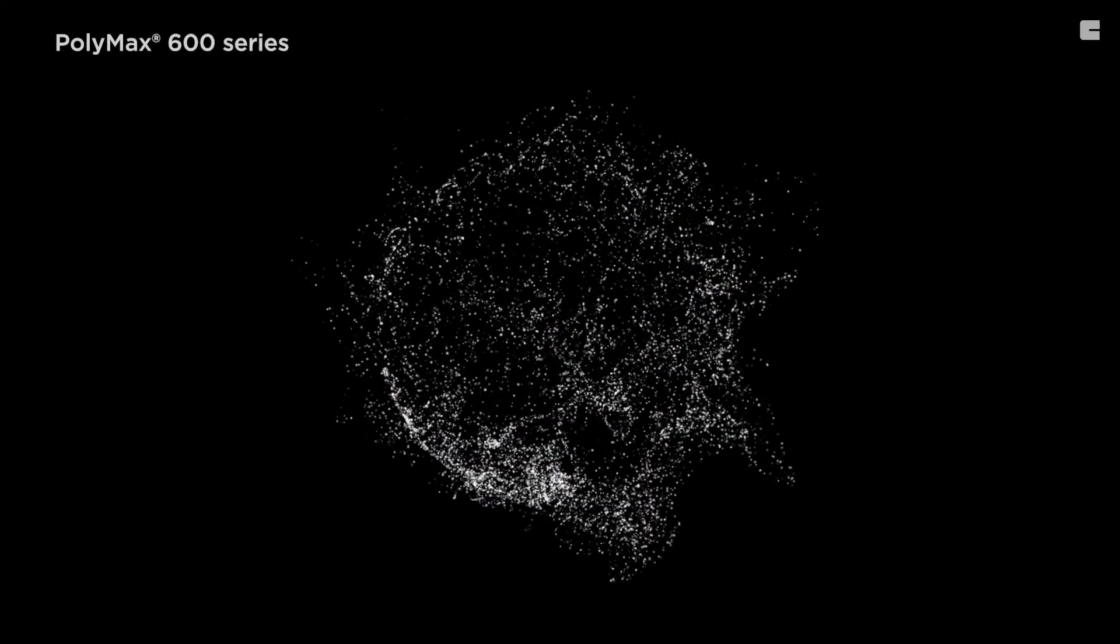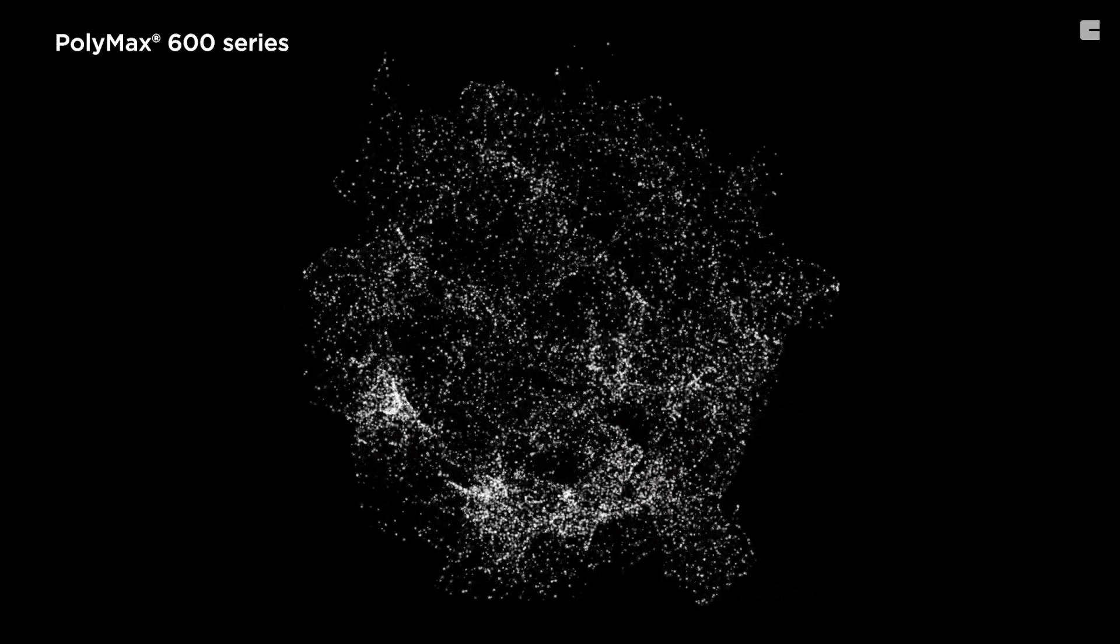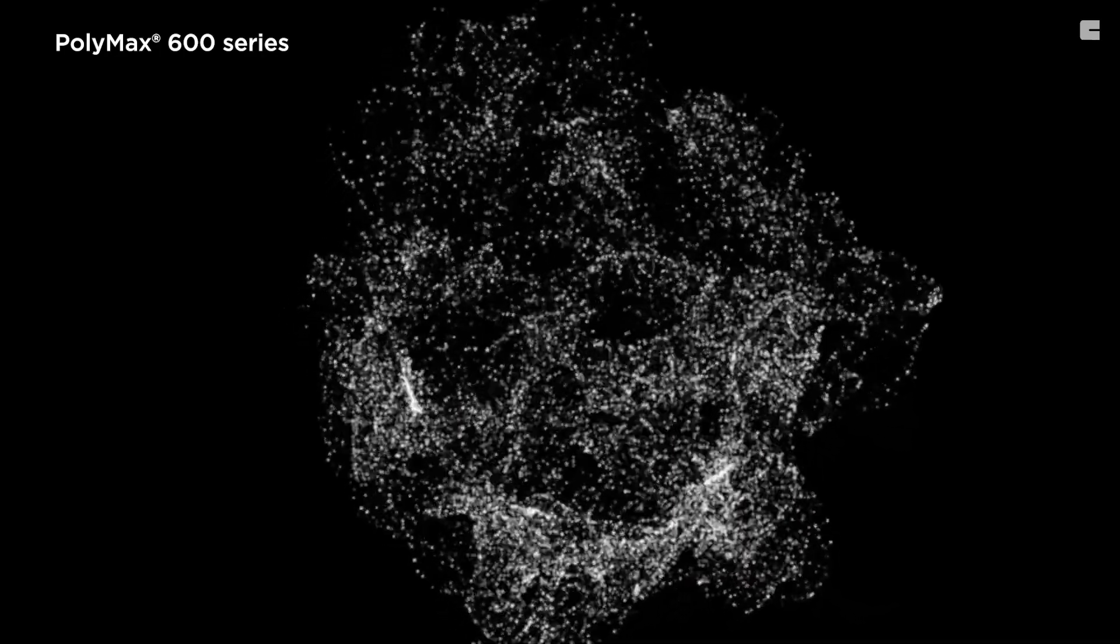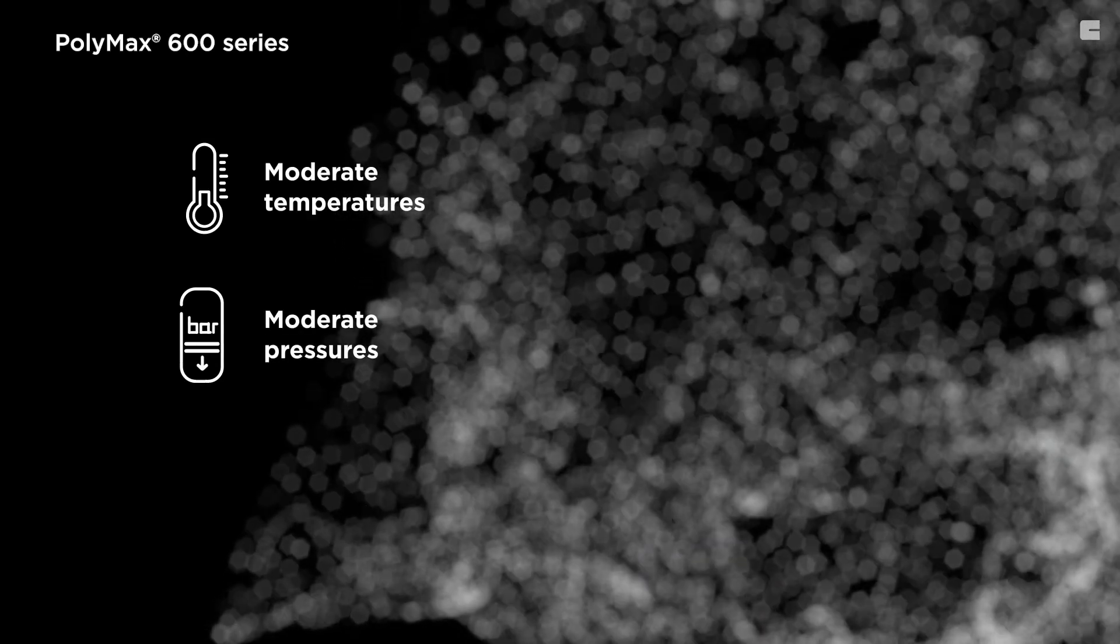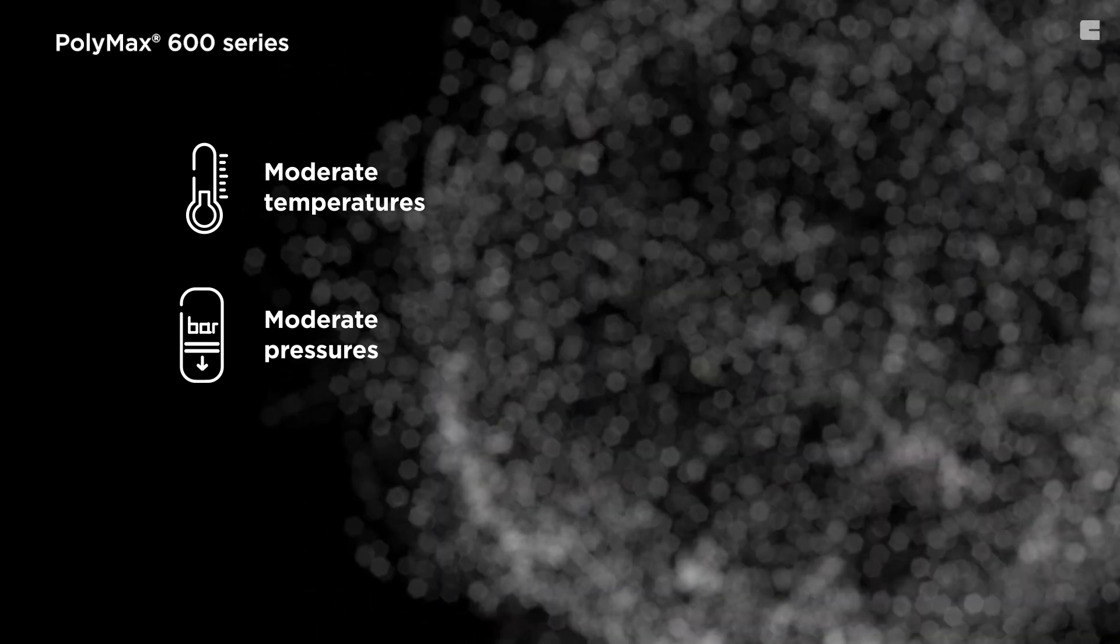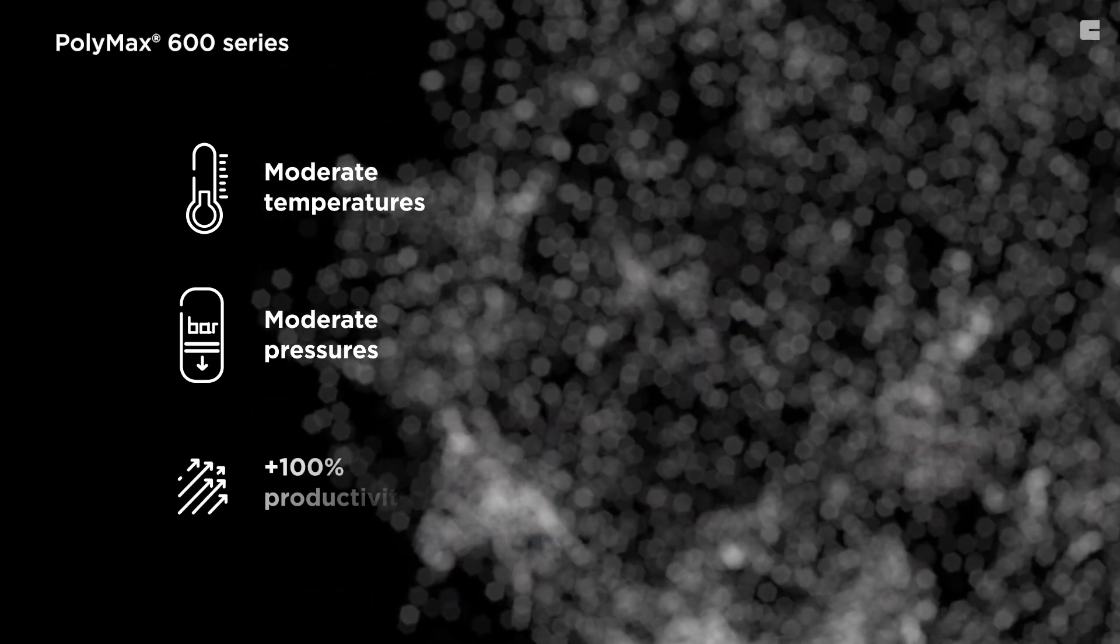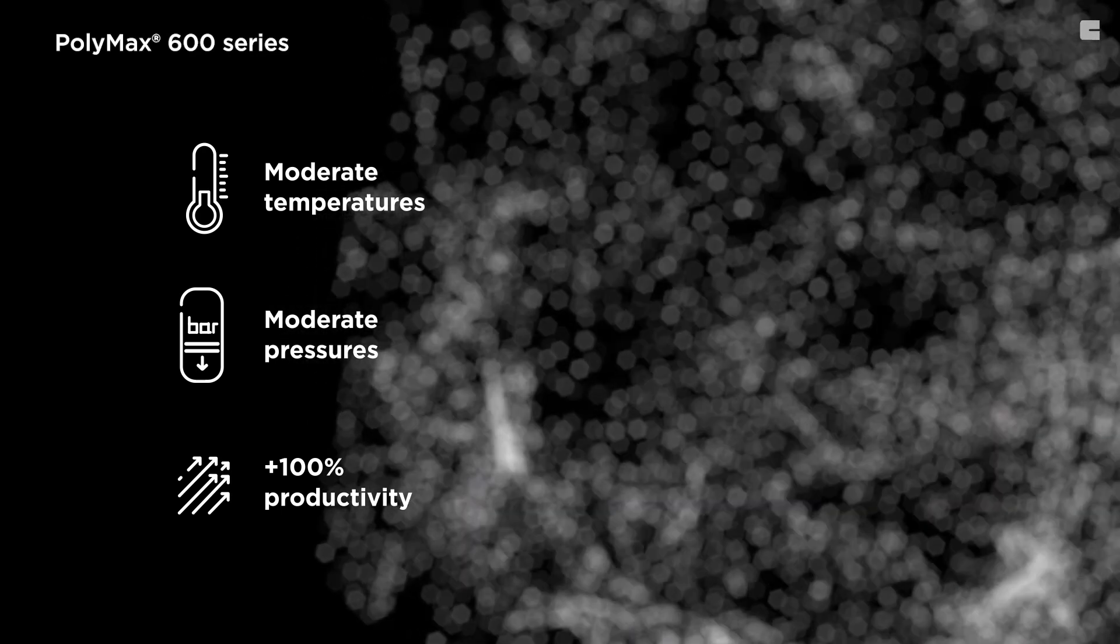The new phthalate-free and reach-compliant Polymax 600 Series Catalysts are used during polymerization to facilitate the reaction at moderate temperatures and pressures. Thanks to a unique support morphology and internal donor combination, Polymax 600 Series increases productivity up to 100% compared to phthalate-based catalysts.